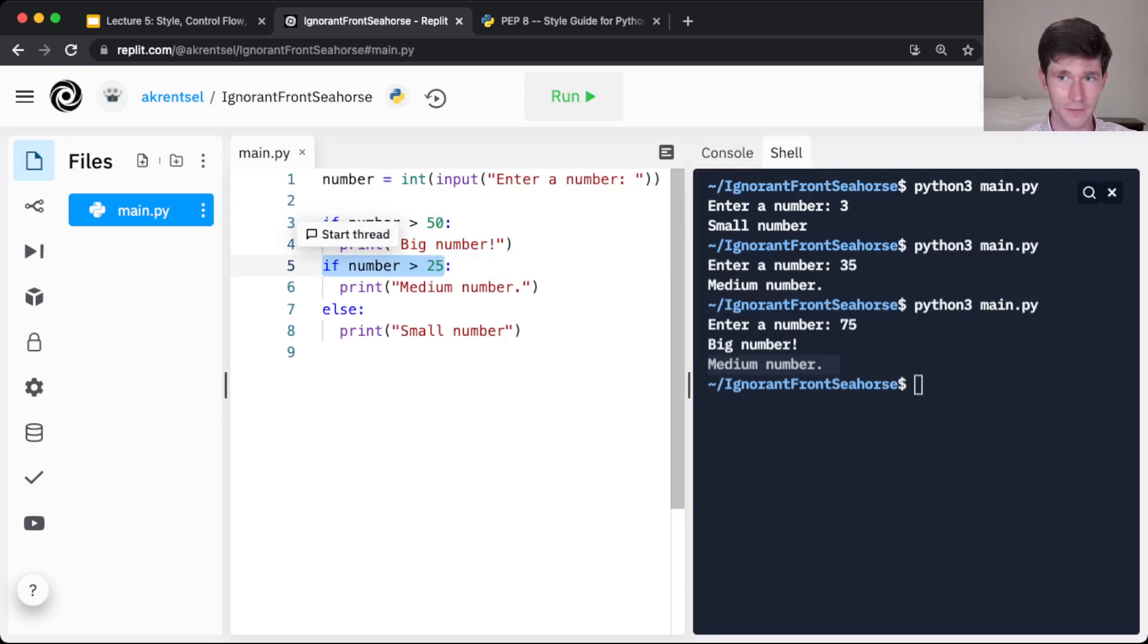This line five is also an if statement. It's not an elif. Elif only gets executed, only gets checked if all of the previous conditions in that set of conditions being checked evaluate to false. If will get checked every single time, regardless of which previous conditions were true and which weren't. And so the number 75 is bigger than 50, so we print big number, and it is also bigger than 25, so we print medium number.